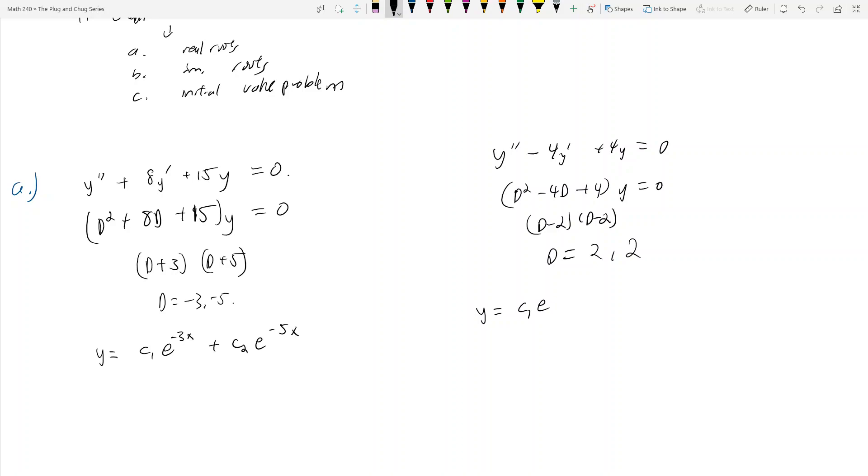Here I get y equals C1 e to the 2x. It's really tempting to say the second one is C2 e to the 2x, but the problem is these guys are linearly dependent by a factor, some scalars. In order to make this work out, because we have the second root, this is going to be C2x e to the 2x.